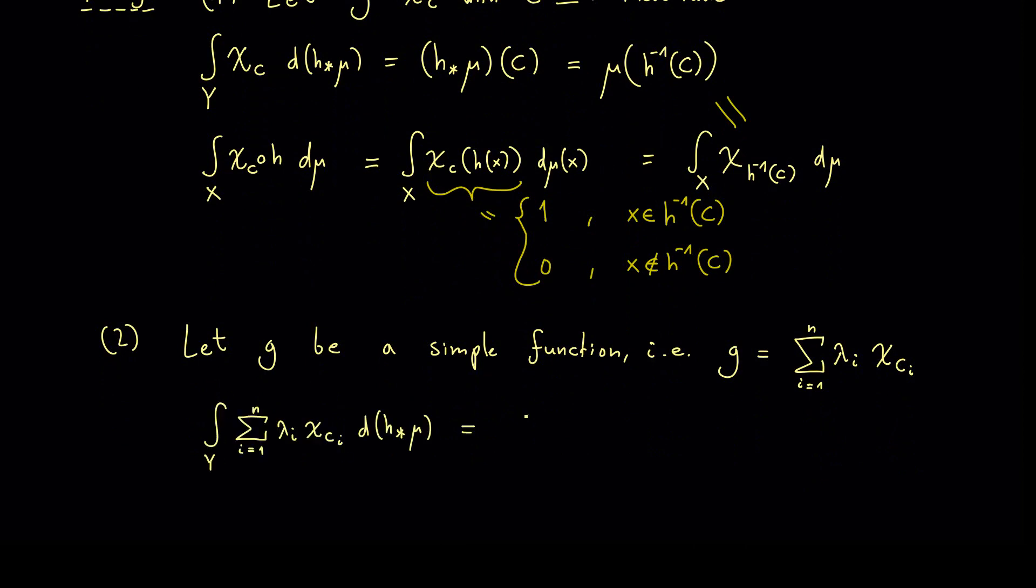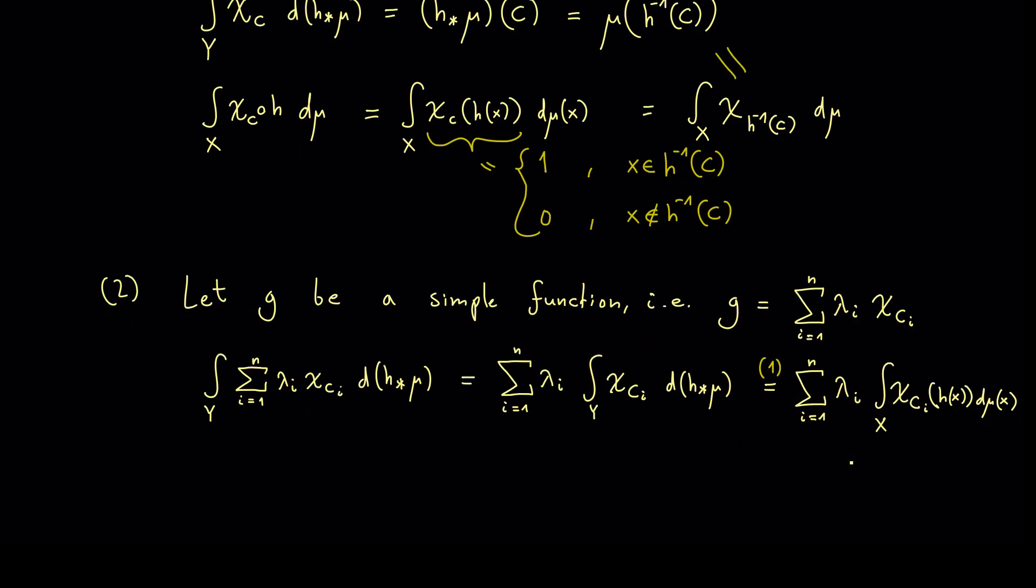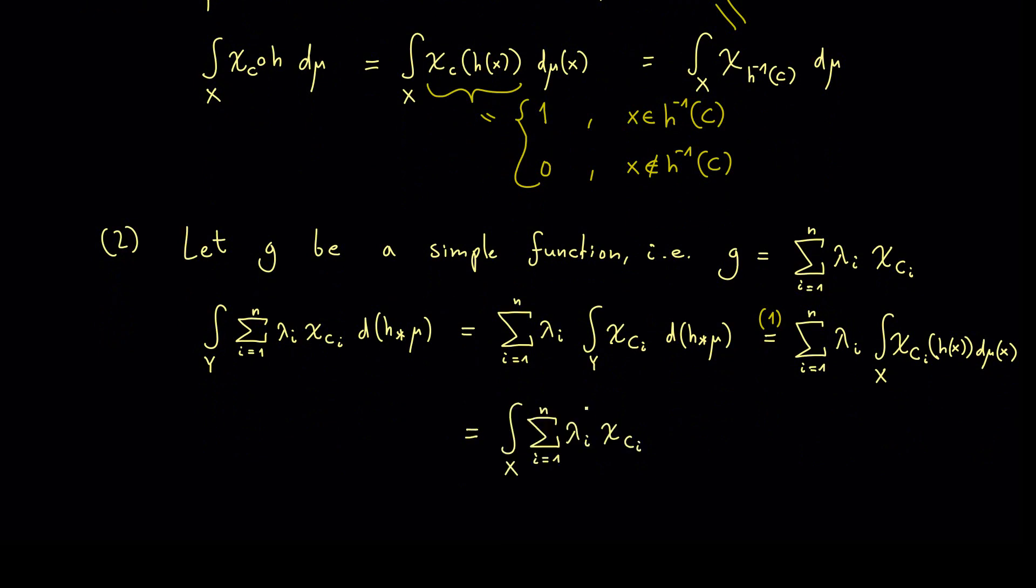So this is the left hand side so we can pull out the whole sum and also the coefficients lambda i. This is just the linearity of the Lebesgue integral. And for this integral here we can just use our first case 1. This means that we have here the integration over x and the characteristic function composition with h so h x and then demu x. And of course now we want to push the sum inside the integral again. And here I want to use parentheses and say ok we put in h of x and here we have demu x. However now you see this is exactly our right hand side because this is just g our simple function and the composition with h over x and the measure mu. And of course on the left hand side we started with the function g.